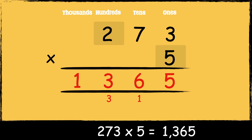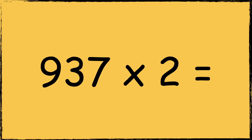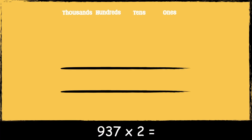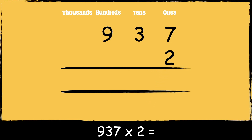Here's the next calculation: nine hundred and thirty-seven times two. First we make sure the numbers are lined up accurately. The number 937 has seven ones, three tens, and nine hundreds. The number two has two ones. Now that we're set up, we're ready to multiply. First we multiply two by seven.